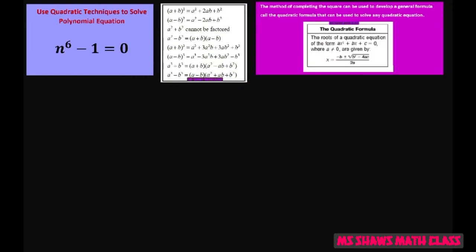So let's do that. Here's your quadratic formula. And the first one, we had n squared minus n plus 1 equals 0. Therefore, we have a equals 1, b equals negative 1, and c equals 1.